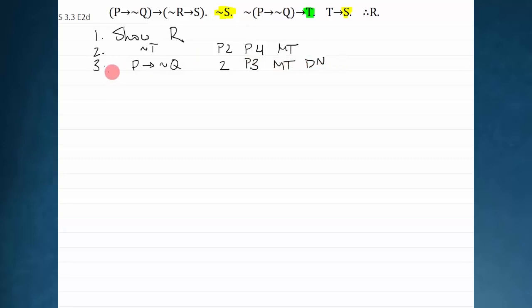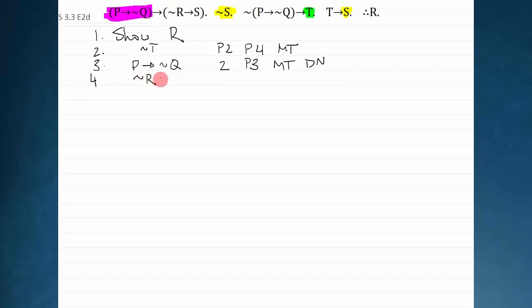Now I have p arrow not q, and notice p arrow not q is the antecedent over here. So I can just run a straight clean modus ponens and get not r arrow s. That's line 3 and premise 1, modus ponens.